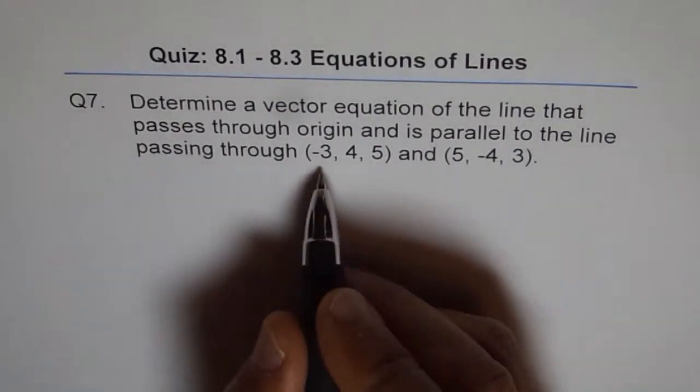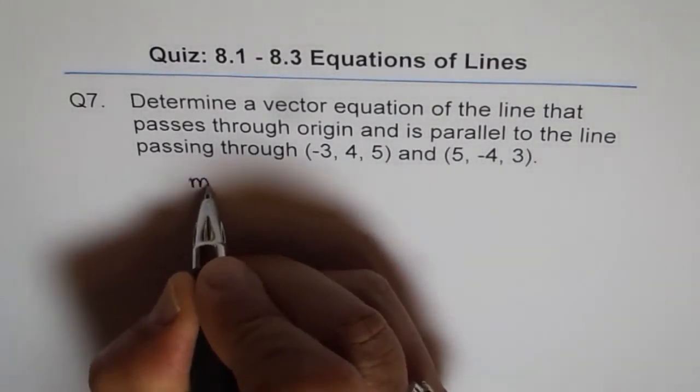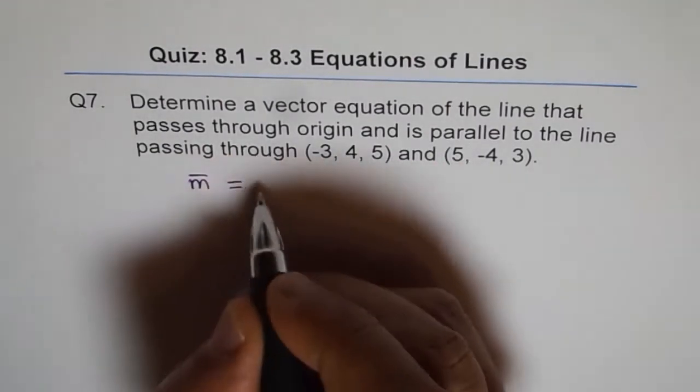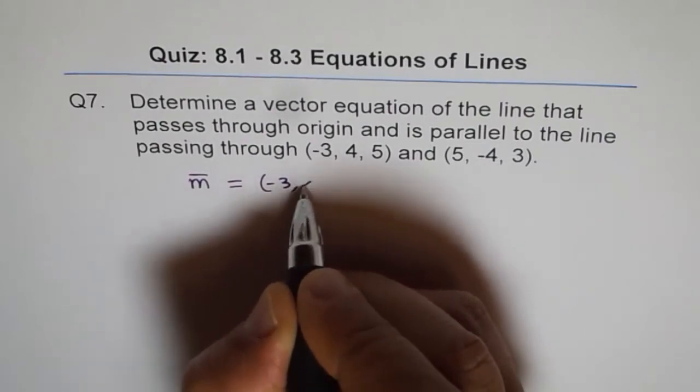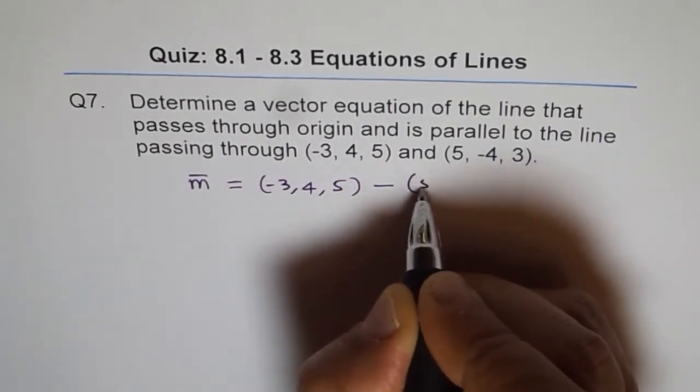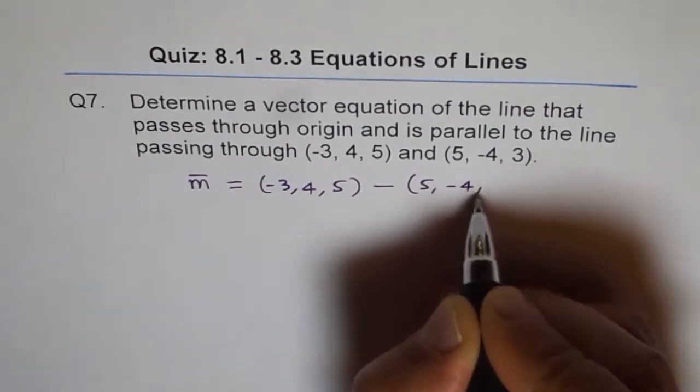The direction vector through these two points - we can find m, direction vector is A minus P. So you can write this: (-3, 4, 5) take away (5, -4, 3).